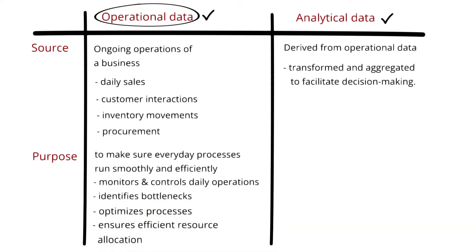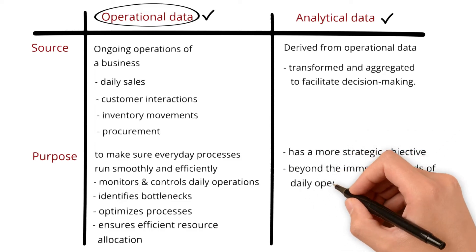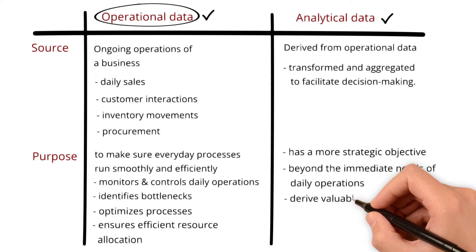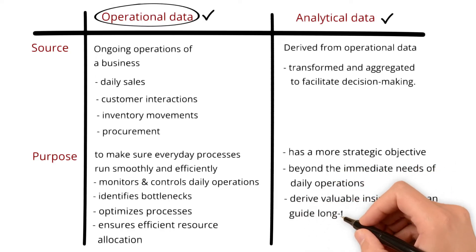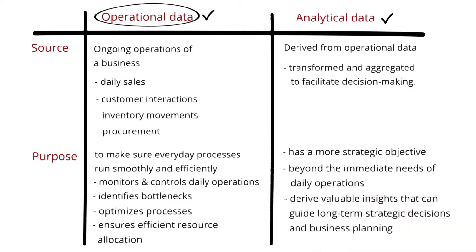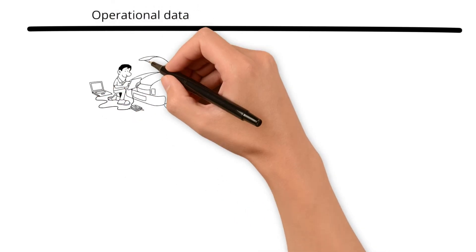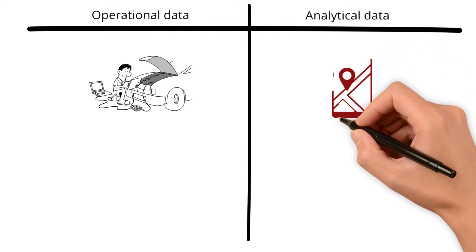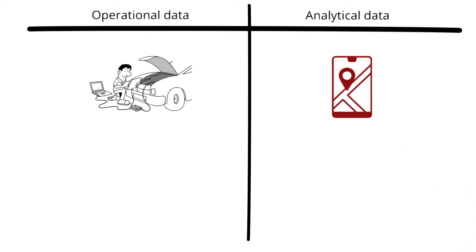Analytical data, on the other hand, has a more strategic objective. Its purpose extends beyond the immediate needs of daily operations. The primary goal here is to derive valuable insights that can guide long-term strategic decisions and business planning. To keep it simple, operational data is like the engine running your car. It's an immediate need to keep things moving, while analytical data is like your GPS. It guides you with insights based on the past data that help you plan the best route.